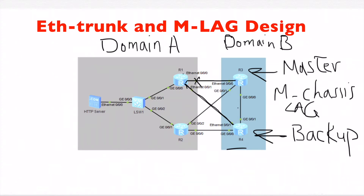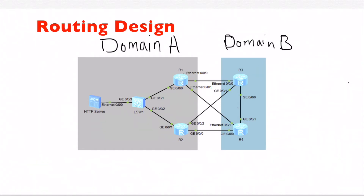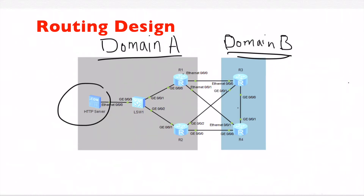If the master connection between R1 and R3 faces a failure, the connection from R1 to R4 will become the main connection, and R4 will turn to the master state. The Ethernet trunk from R1 to R3 and R4 is configured with the same IP address in VLAN 11, and its gateway is the virtual IP for R3 and R4 — and the same for R2. There must be routing between domain B and domain A so domain B can get the route to the HTTP server.